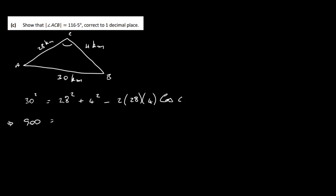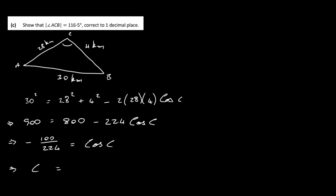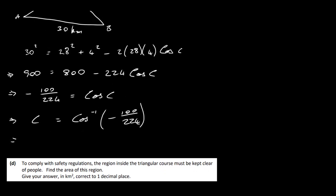Working through the numbers: 900 equals 784 plus 16 minus 224 cos C, so 900 equals 800 minus 224 cos C. Rearranging gives minus 100 over 224 equals cos C. Therefore C equals cos⁻¹(−100/224).